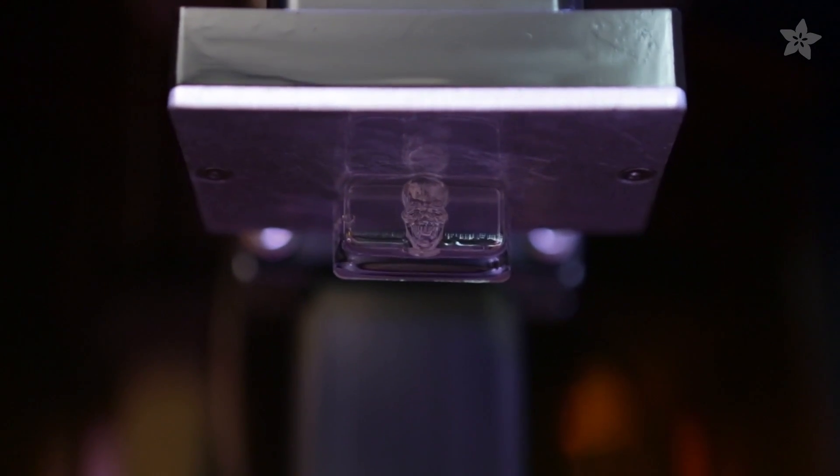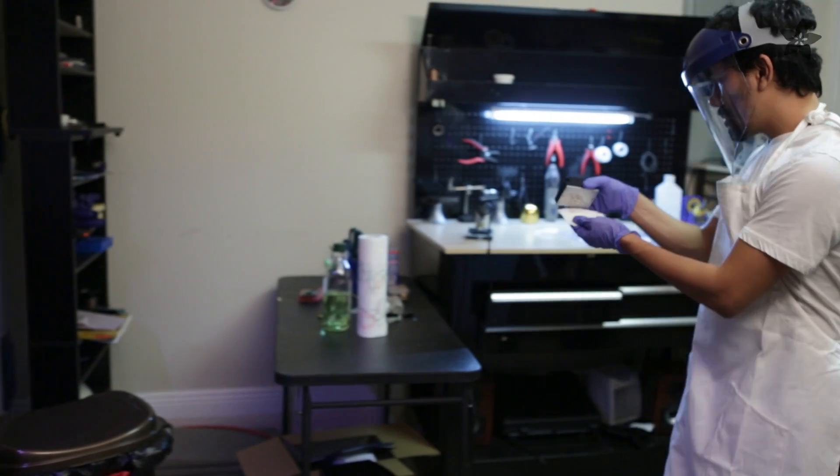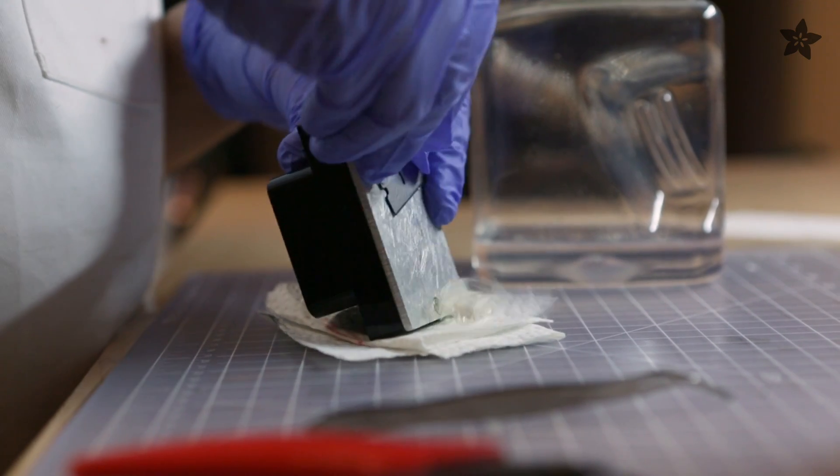Now to remove the print from the bed, we're going to use a flat spatula, and this will just help release the part from the build plate. This one just kind of popped off nicely.